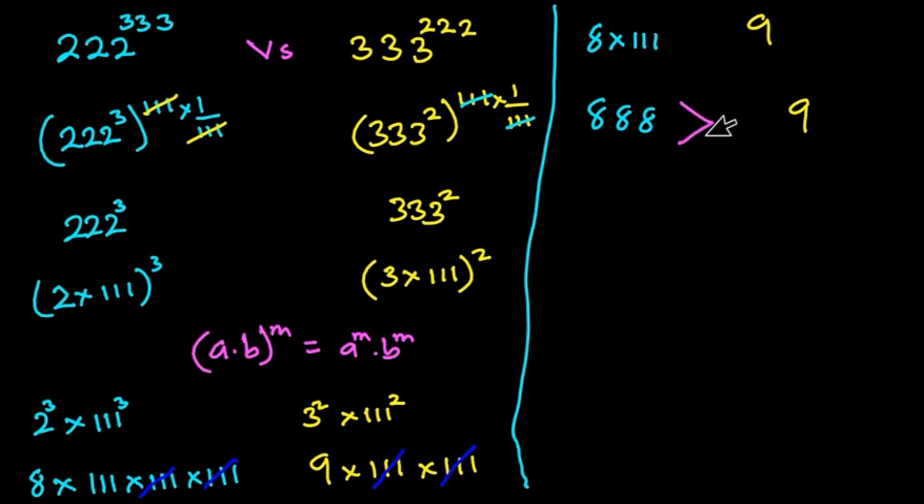So straight away you can tell that 888 is greater than 9. So this means that 222 to the power 333 is greater than 333 to the power 222. I hope you enjoyed watching this video.